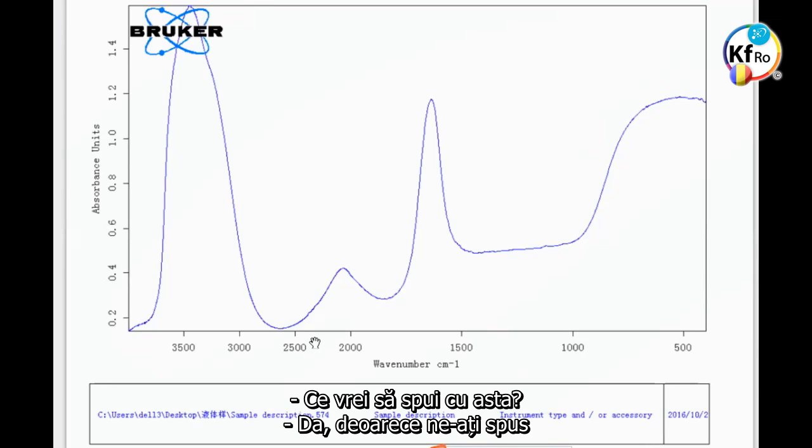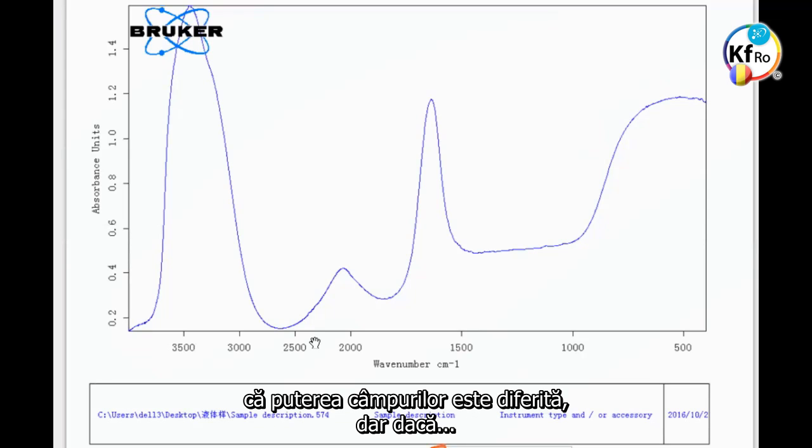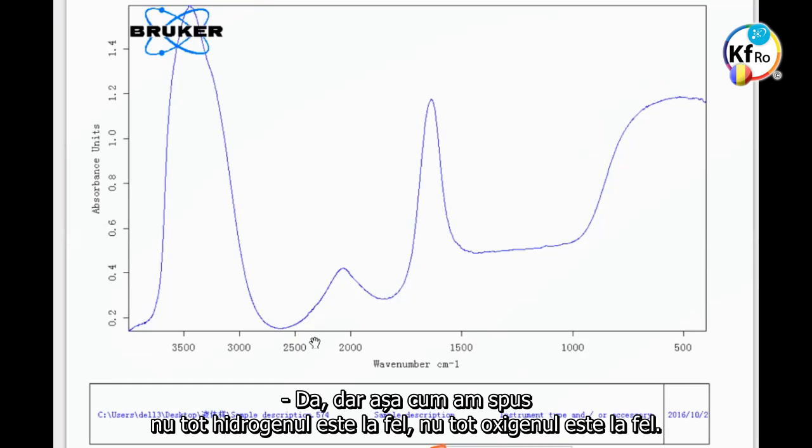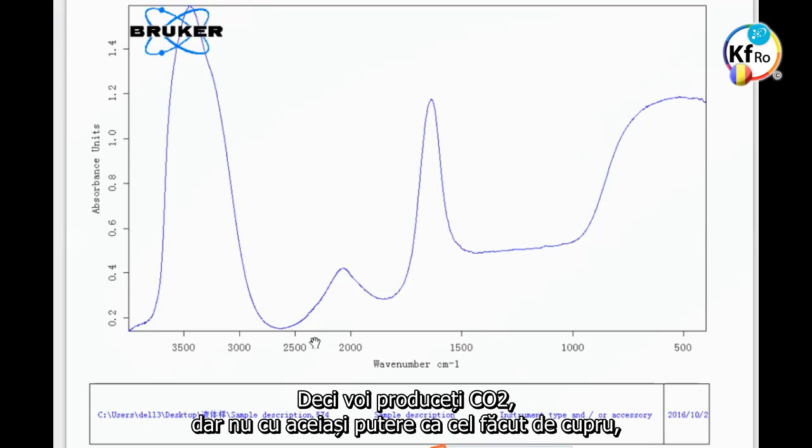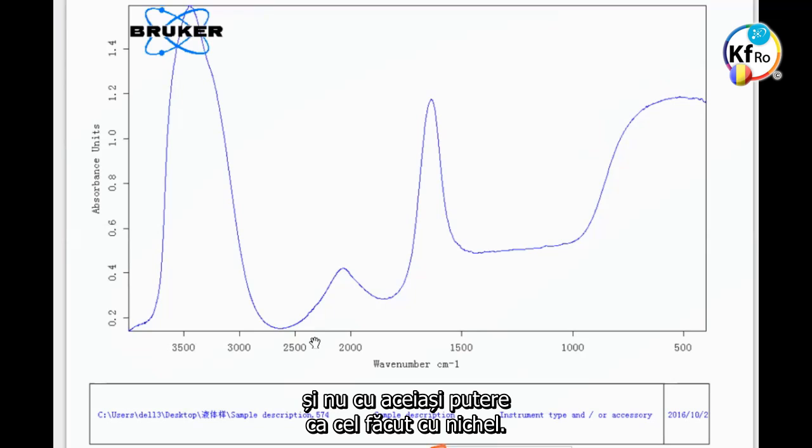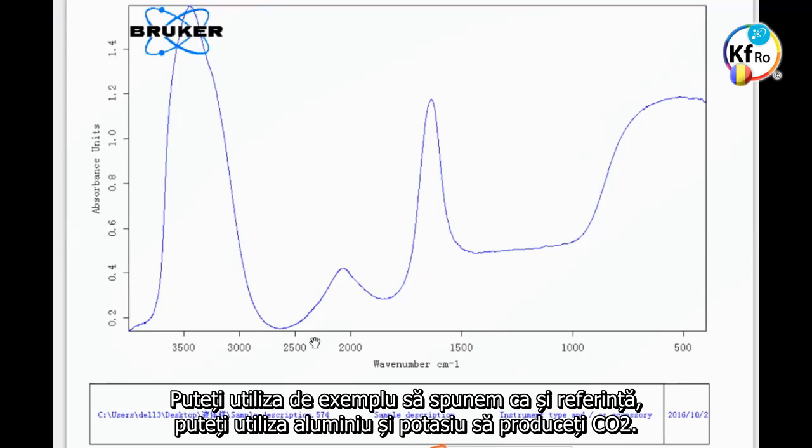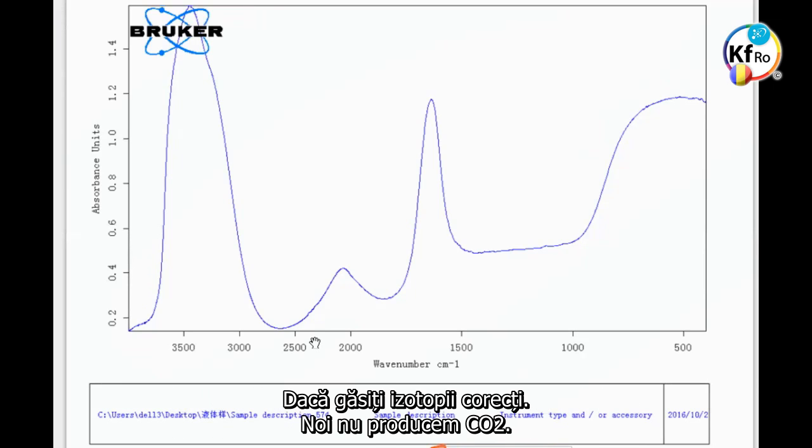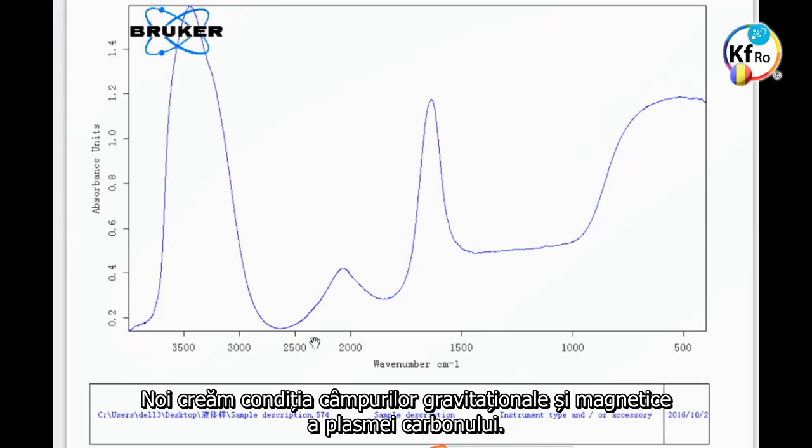As I said, not all the hydrogens are the same, not all the oxygen are the same. So you produce CO2, but not of the same strength as you do with copper, and not the same strength as you do with nickel. You can use, for example, aluminum and potassium to produce CO2 too if you find the right isotopes. We don't produce the CO2, we create the condition of the gravitational magnetic field of the plasma of the carbon.